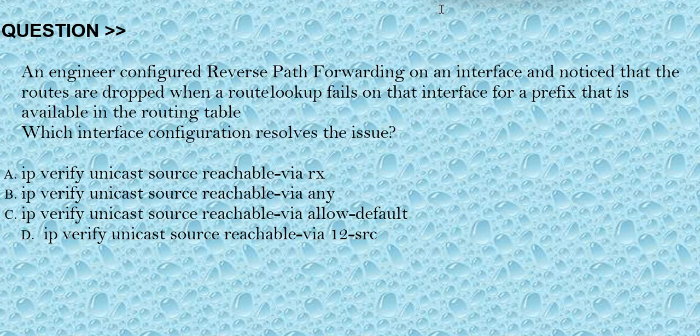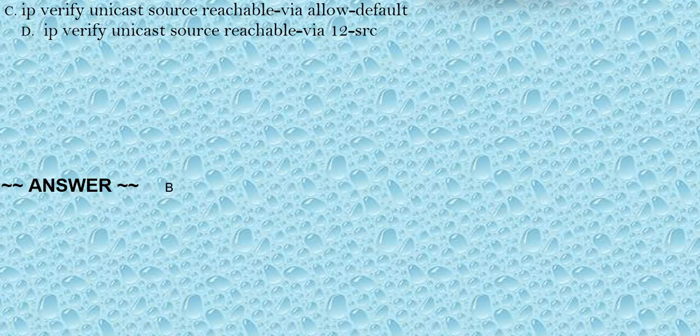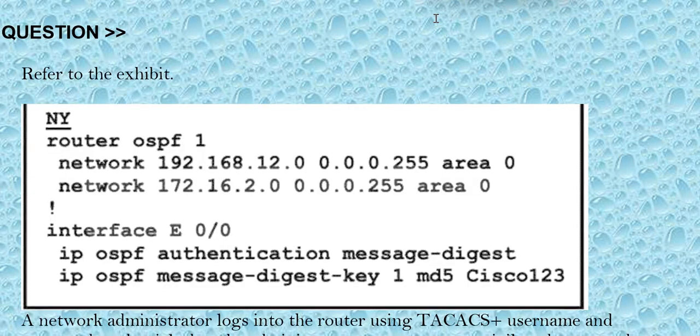Our next question is: an engineer configured reverse path forwarding on an interface and noticed that routes are dropped when a route lookup fails on that interface for a prefix that is available in the routing table. Which interface configuration resolves the issue? Option A: ip verify unicast source reachable-via rx. Option B: ip verify unicast source reachable-via any. Option C: ip verify unicast source reachable-via allow-default. Option D: ip verify unicast source reachable-via l2src. The correct answer is option B.